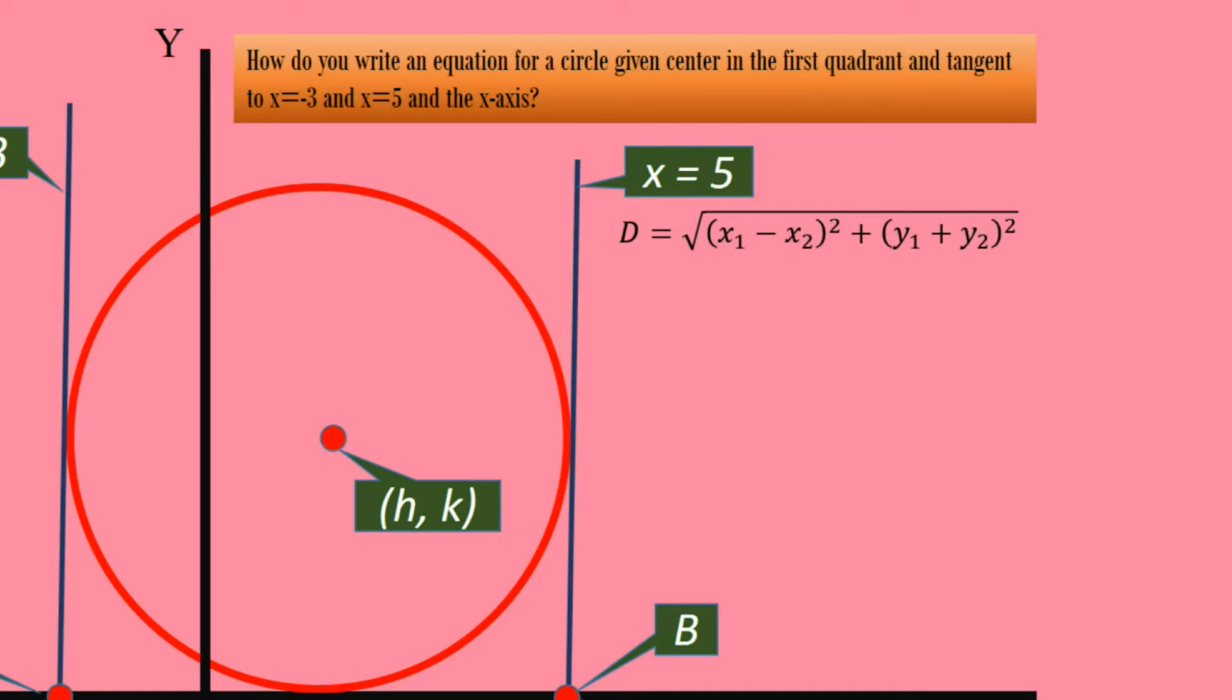Let us calculate the distance using the formula. d = √((x1-x2)²+(y1-y2)²). Plug in the values. x1 is -3, x2 is 5, y1 is 0 and y2 is also 0. On simplifying, we get (-8)². On squaring, we get √64. The square root of 64 is 8. The diameter of the circle is 8.